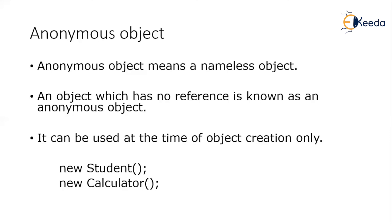By using that name of the object, I can reuse the created object. However, whenever we create an object but don't assign any reference to it, such an object is termed as an anonymous object. For example, new Student — the object is created but I cannot refer to that particular object after creation. I can only use it at the time of object creation. Similarly, new Calculator with no reference — I cannot use that object further.